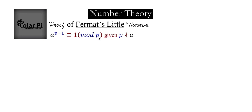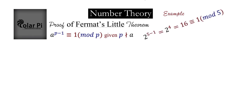So if p is a prime, a is a natural number, and p doesn't divide a, then a to the power p minus one has to be congruent to one mod p. I've provided you an example elsewhere, but let's look at a little example here. Let's take p to be five and a to be two. Clearly, five is a prime and five doesn't divide two, so Fermat's little theorem applies: two to the power five minus one has to be congruent to one mod five, and it is.